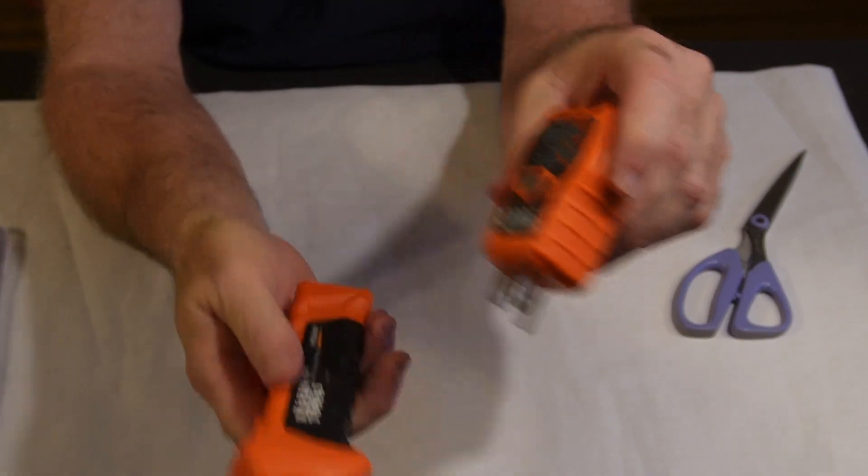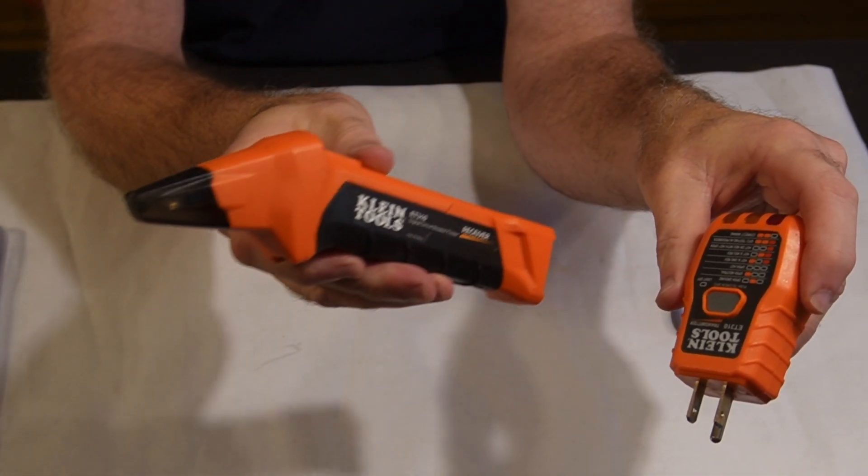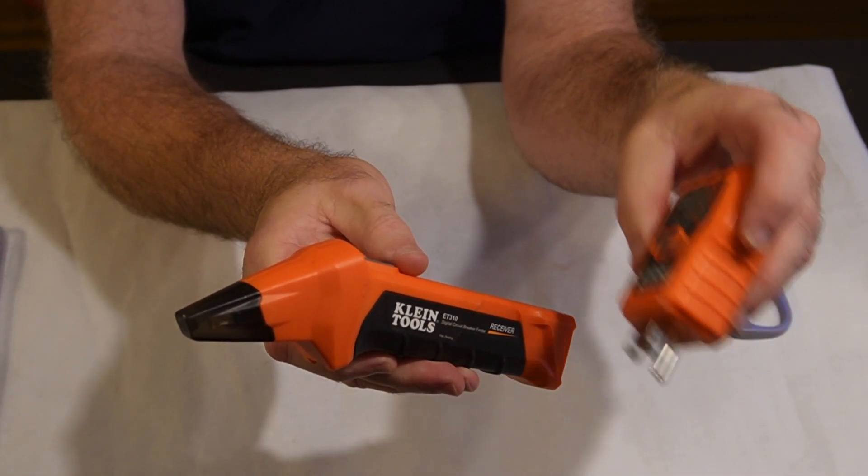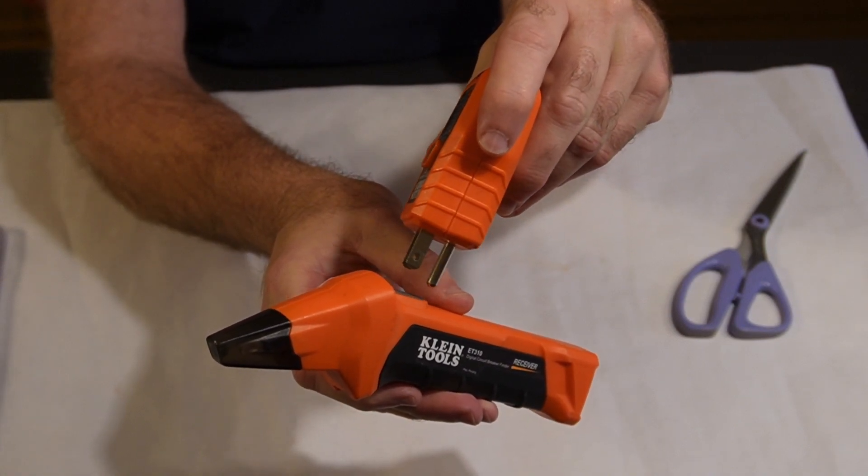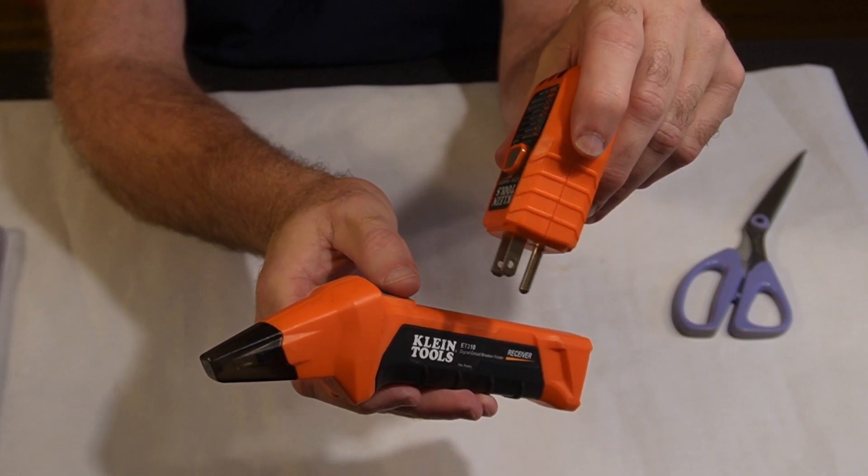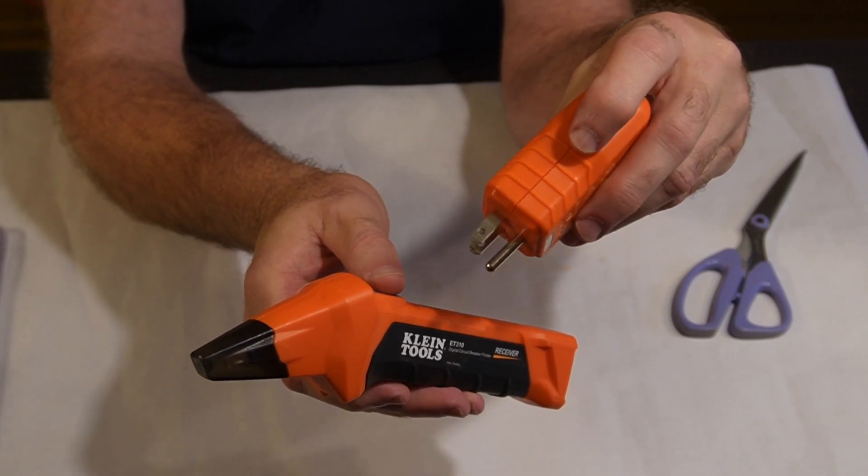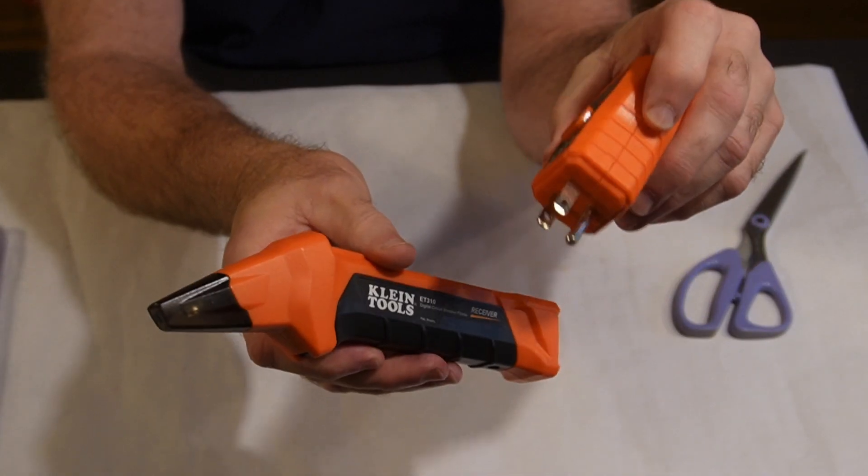So you plug this in, you go to the panel, turn this on, and you go to each breaker. When it finds the circuit that this is plugged into, it'll beep. Most houses are not labeled all that well, even new ones, so this is a big help when you're doing electrical work to find the circuit that you're working on.